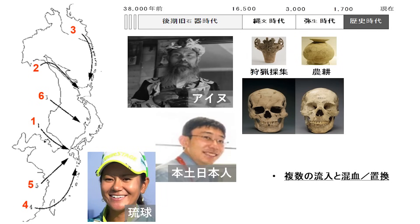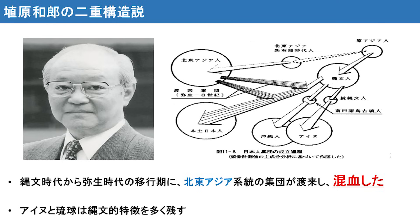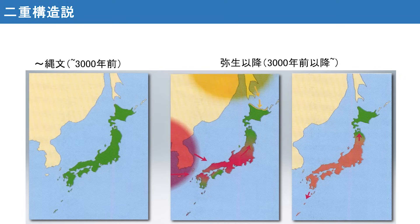縄文時代の人々は狩猟採集民です。この縄文時代の後には弥生時代が開始し、農耕を伴った集団が日本列島に広く分布します。これらの集団の成立に関しては埴原の二重構造説がうまく説明しています。この説では、縄文時代から弥生時代の移行期に北東アジア系統の集団が渡来し混血することによって日本列島人集団が成立したと説明しています。また縄文人につながる後期旧石器時代の人々は東南アジアに由来するとも説明しています。